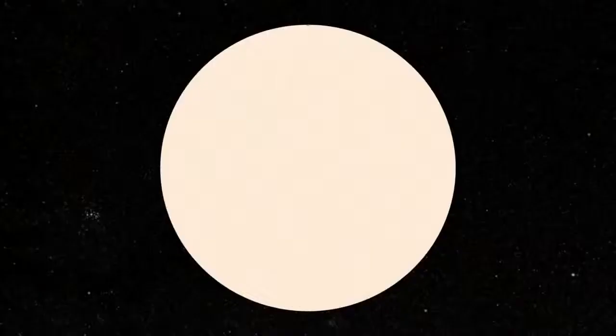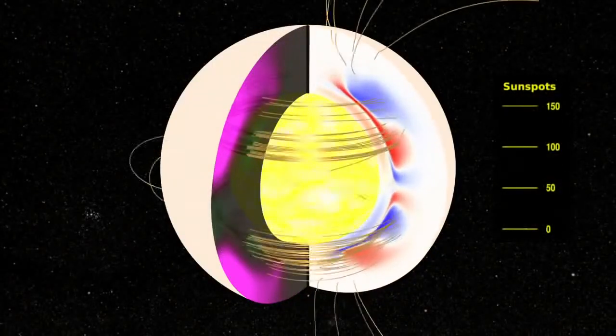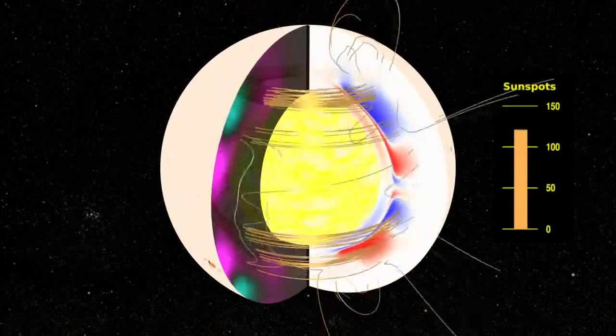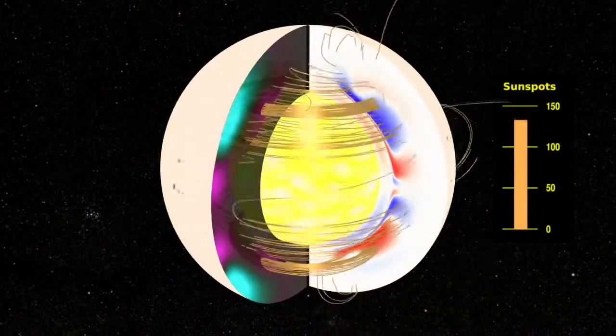Solar flares and CMEs are all driven by magnetic reconnection. This is where the Sun winds up the magnetic field, and then it causes oppositely directed magnetic fields to annihilate. But you can't just get rid of energy — you have to convert that energy and transfer it into other things such as plasma motions, accelerating the plasma, heating up the plasma, and also giving out more light.